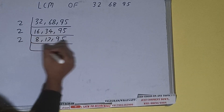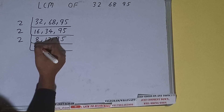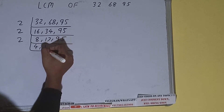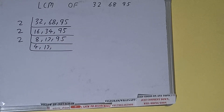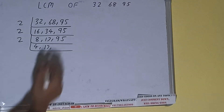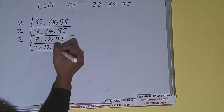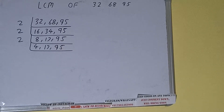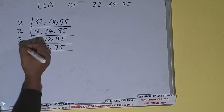Again, if we check, now only the first number is divisible by 2, so we'll divide only the first number and it will become 4. The second number will remain as 17 — it will not change because it was not divisible by 2 — and the third number will also remain the same. Again, only the first number is divisible by 2, so let's divide.